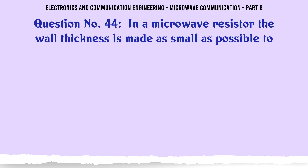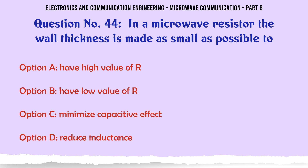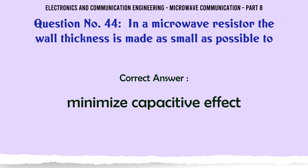In a microwave resistor, the wall thickness is made as small as possible to — A. Have high value of R, B. Have low value of R, C. Minimize capacitive effect, D. Reduce inductance. The correct answer is: minimize capacitive effect.